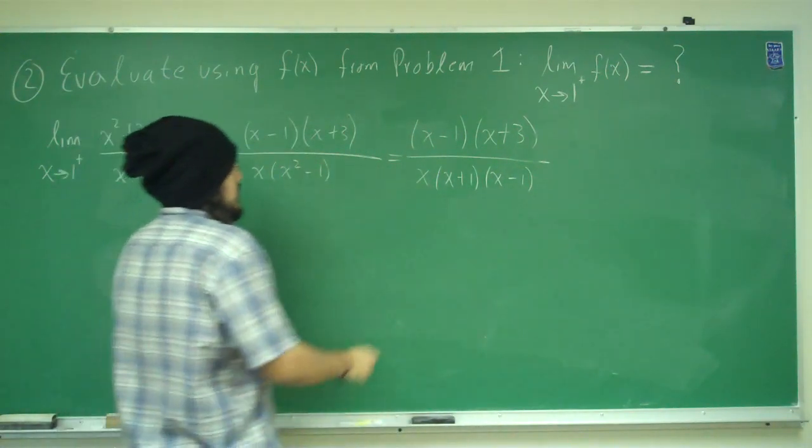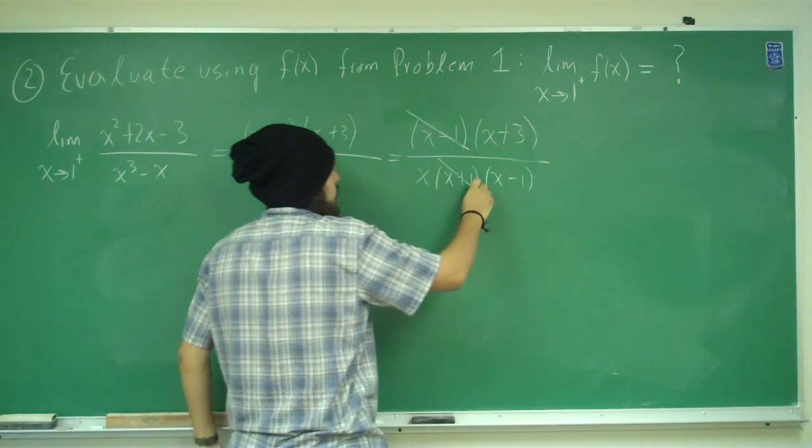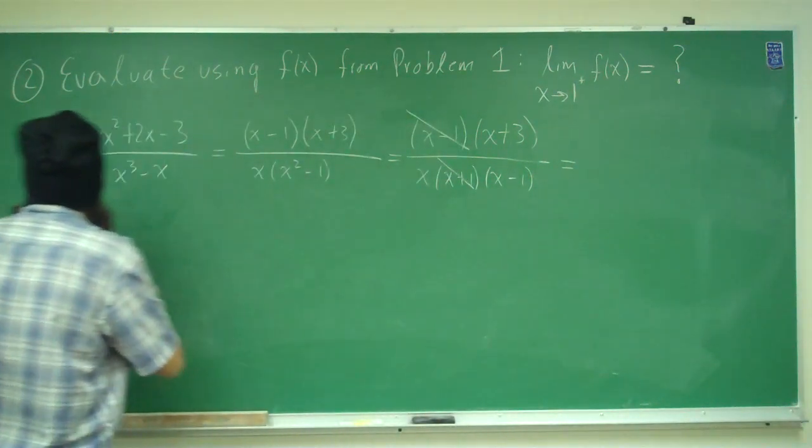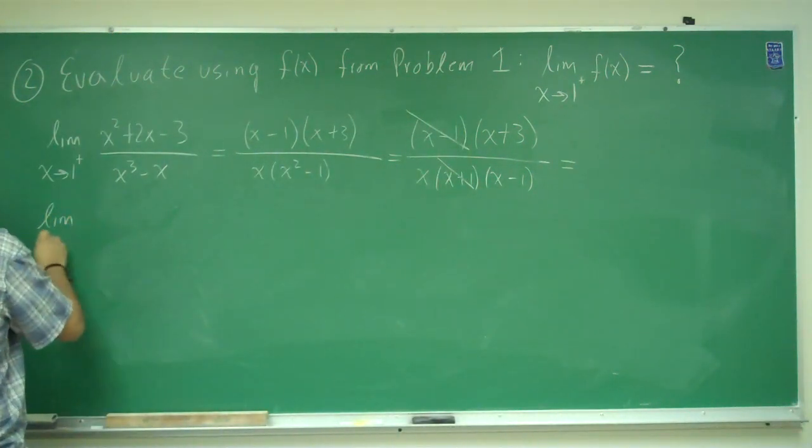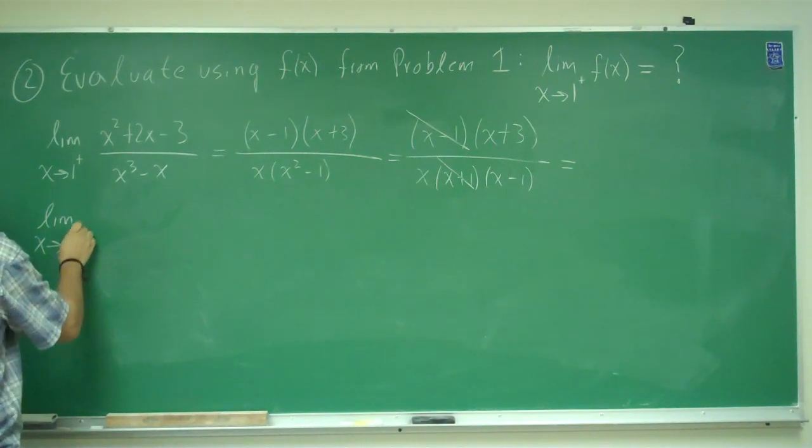Alright, good, now we can cancel this out, that's a whole, so we're left with the limit as x approaches 1 from there.